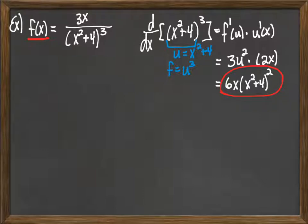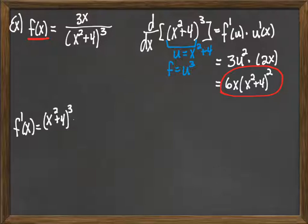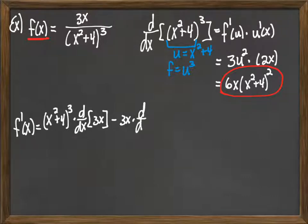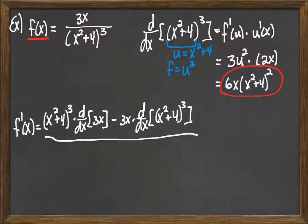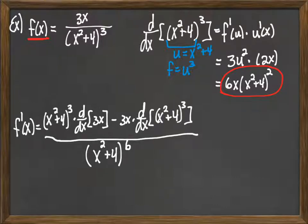Now we're ready to go back to our full function — 3x over (x squared plus 4) to the third — and invoke the quotient rule. f prime will be: the bottom times the derivative of the top, minus the top times the derivative of the bottom, all over the bottom squared. Since the bottom is raised to the third power, squaring it gives (x squared plus 4) to the sixth. The derivative of 3x is simply 3.